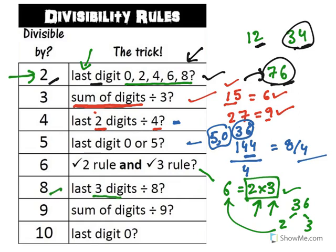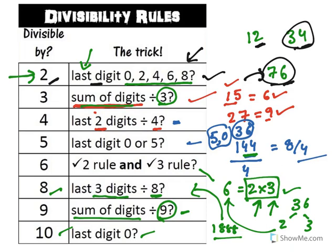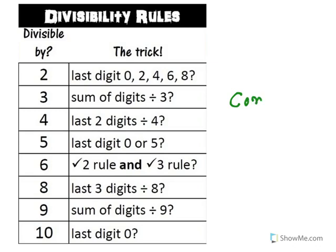For divisibility by 8, the last 3 digits should be divisible by 8 — compare this to 4, where only the last 2 digits matter. For 9, the sum of digits should be divisible by 9, similar to the rule for 3. For 10, the last digit should be 0. You must know this divisibility concept table — this is my first strategy for number series questions.